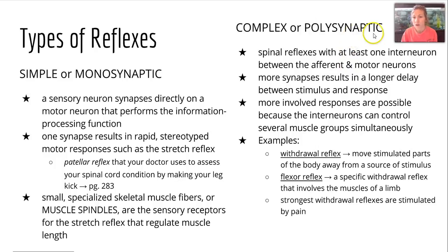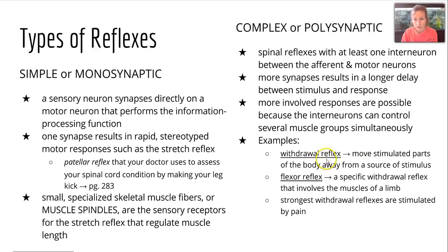Complex or polysynaptic reflexes have at least one interneuron between the afferent — that is, sensory — neurons and motor neurons. The more synapses there are, the longer the delay between stimulus and response. However, there are more involved responses because more interneurons can control more muscle groups. Examples include the withdrawal reflex, which moves stimulated body parts away from the stimulus, and the flexor reflex — a specific withdrawal reflex involving limb muscles. The strongest withdrawal reflexes are stimulated by pain.